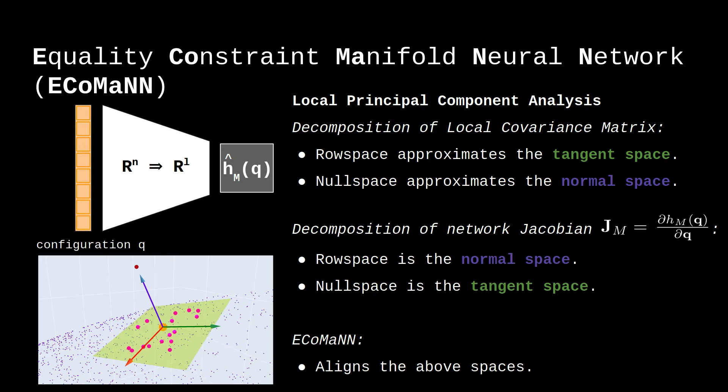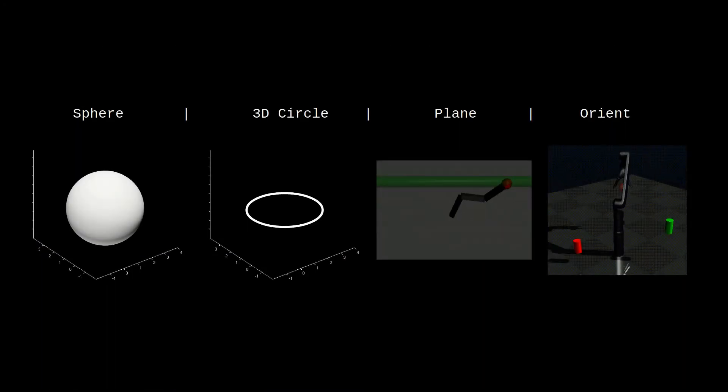We evaluate our method on datasets representing four constraints: staying on the surface of a sphere, staying on a circle in 3D space, keeping the end-effector of a robot arm with three rotational degrees of freedom on a line, and maintaining the end-effector of a robot with six rotational degrees of freedom at a constant downward orientation.